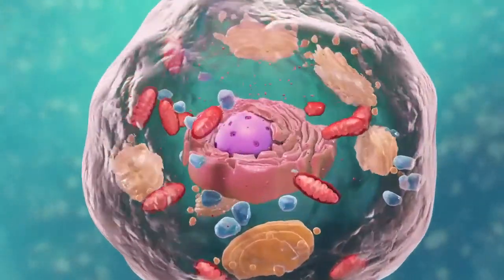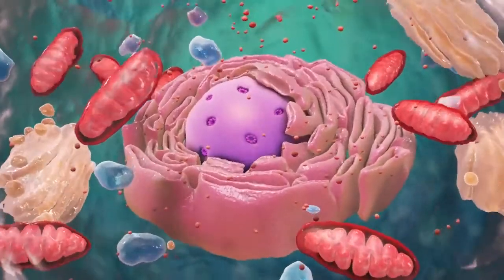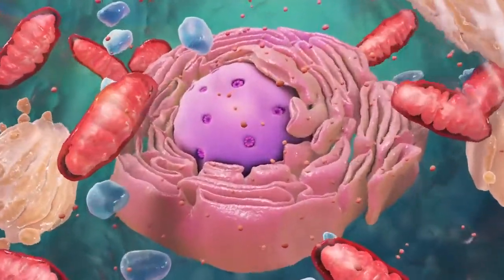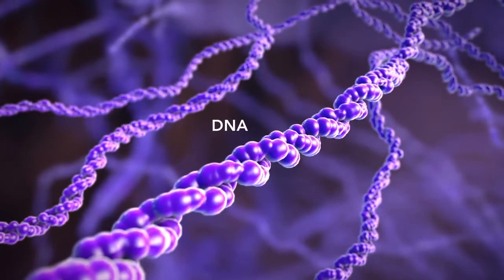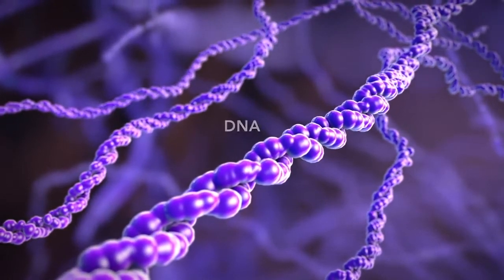Let's start with the nucleus, the control center of the cell. The nucleus contains DNA or genetic material. DNA dictates what the cell is going to do and how it's going to do it.